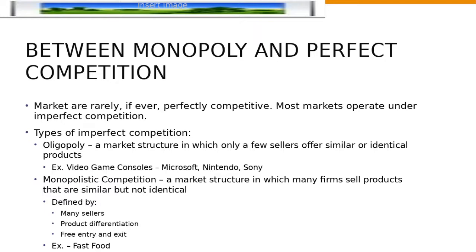A perfect example of oligopoly is Microsoft, Nintendo, and Sony offering video game consoles. The games they offer are largely the same, but there are little differences between their products. Monopolistic competition, however, and this is the focus of what we're going to talk about today, is a market structure in which many firms sell products that are similar but not identical. These markets are defined by the fact they have many sellers, products are differentiated, and there's free entry and exit into the market.